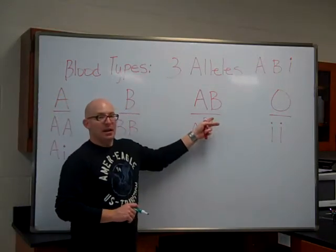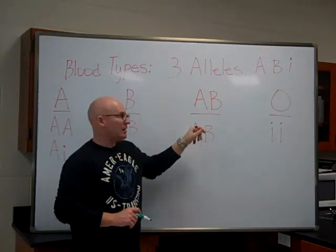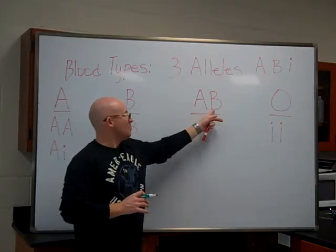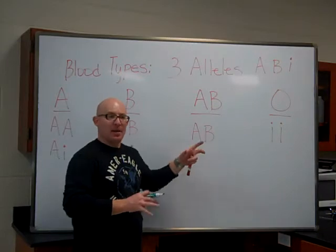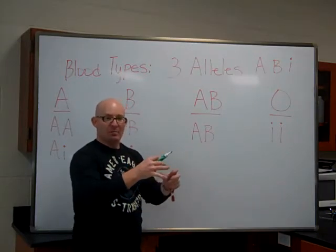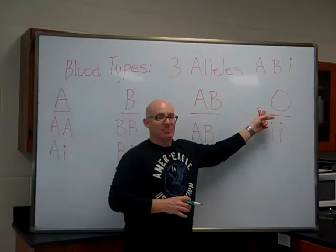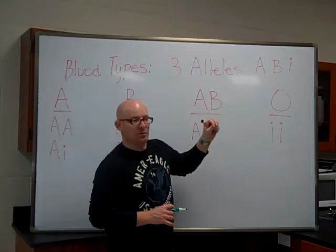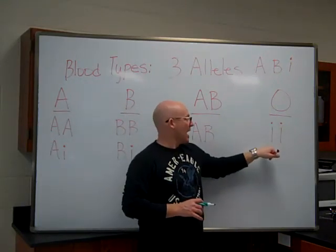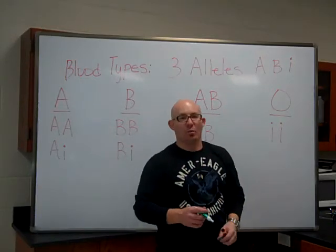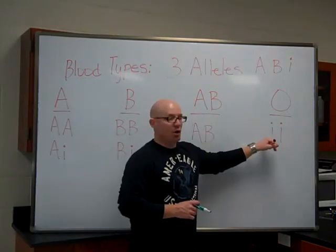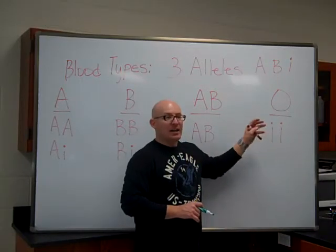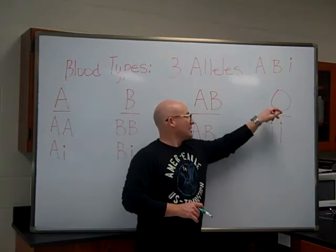For type AB blood, the A and B alleles are both dominant, so they will both show up in the phenotype. If you have AB genotype, you have AB blood type — neither one masks the other. If you have type O blood, it's completely recessive — it's the recessive allele. The only genotype you can have to get type O blood is little i, little i. Just know that it will always be written this way — little i is the O allele.